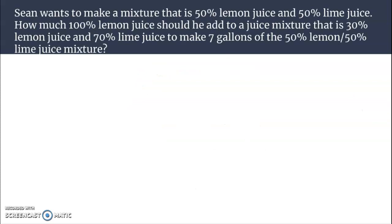All right. This last one has to do with mixtures. Now there's several ways to do mixtures. You can set up a table. But the structure of this one warrants something a little bit different. Let's just look at a couple scenarios here where we have pitcher of lemon juice. Sean wants to make a mixture that is 50% lemon juice, 50% lime juice. How much 100% lemon juice should he add to a juice mixture that is 30% lemon and 70% lime to make 7 gallons of the 50-50 mixture?